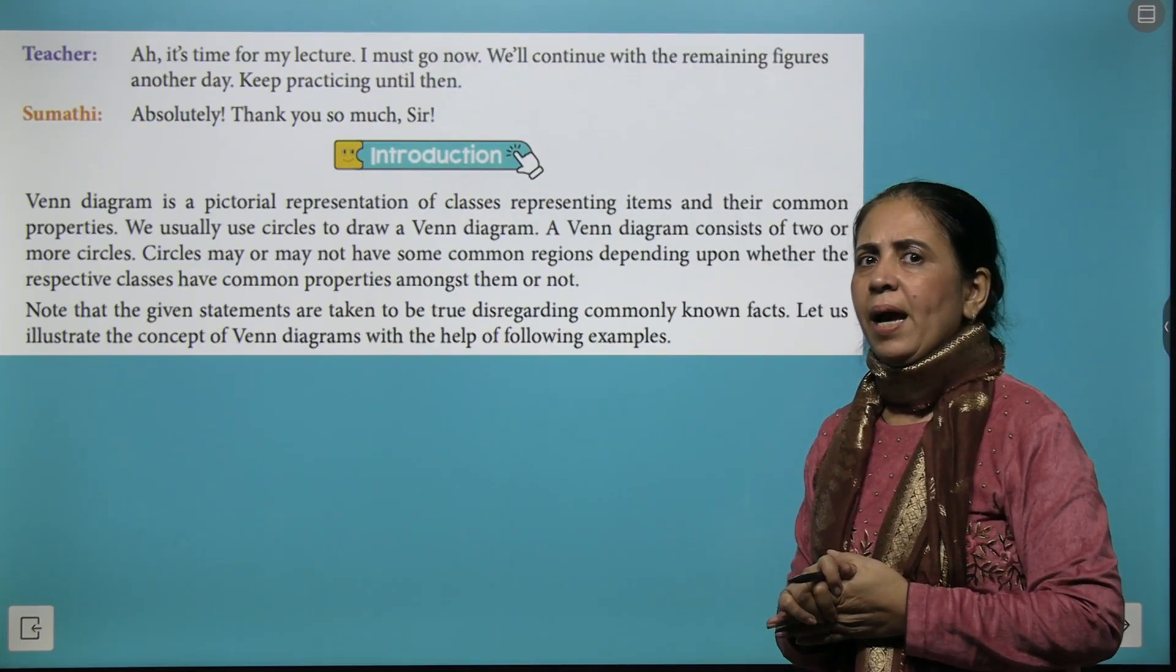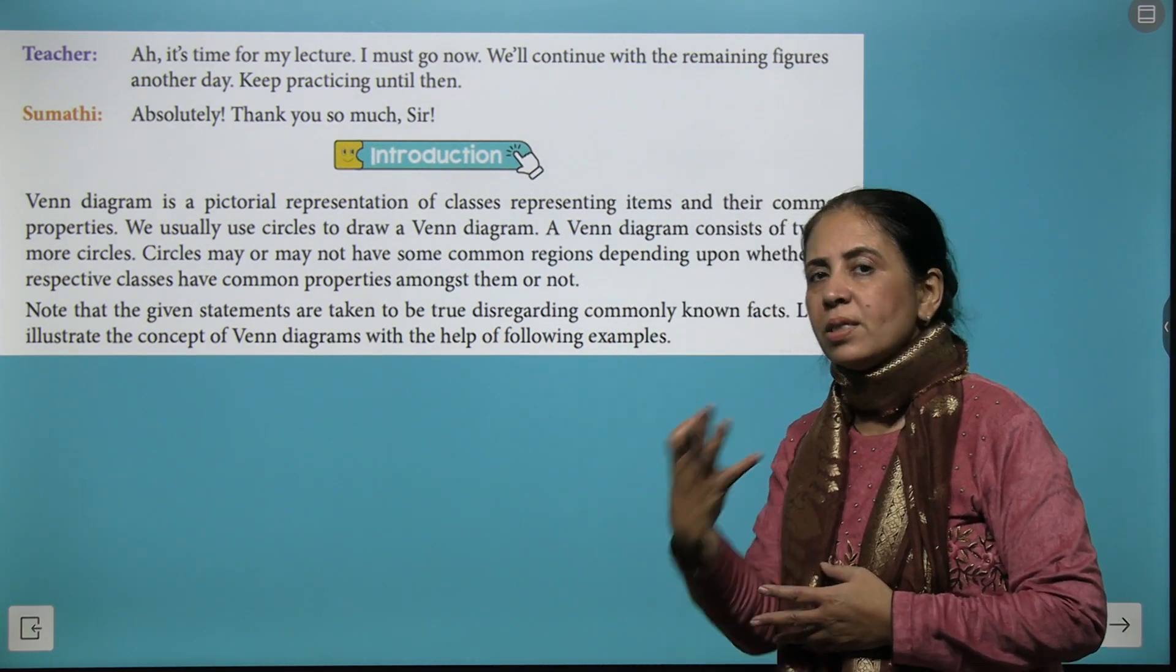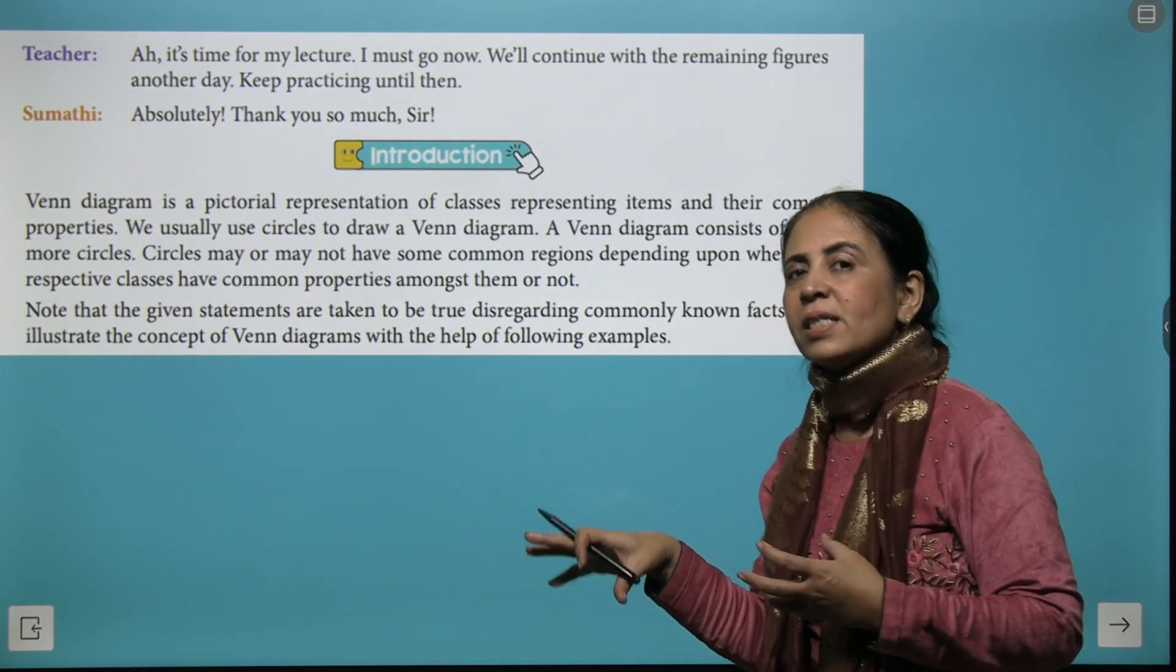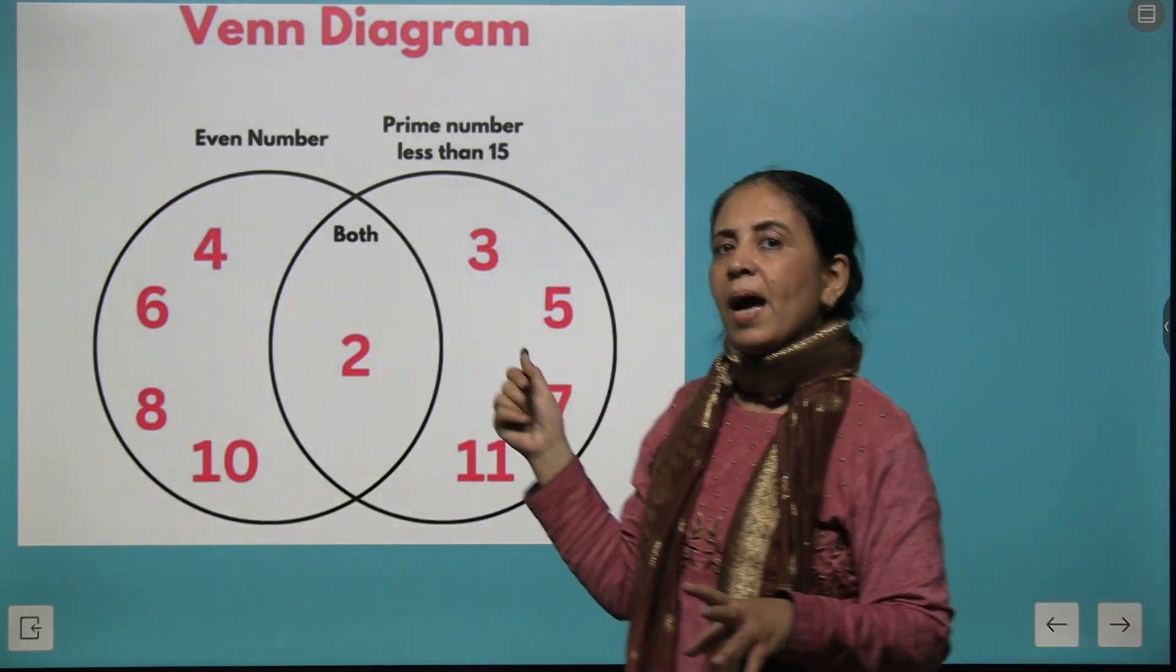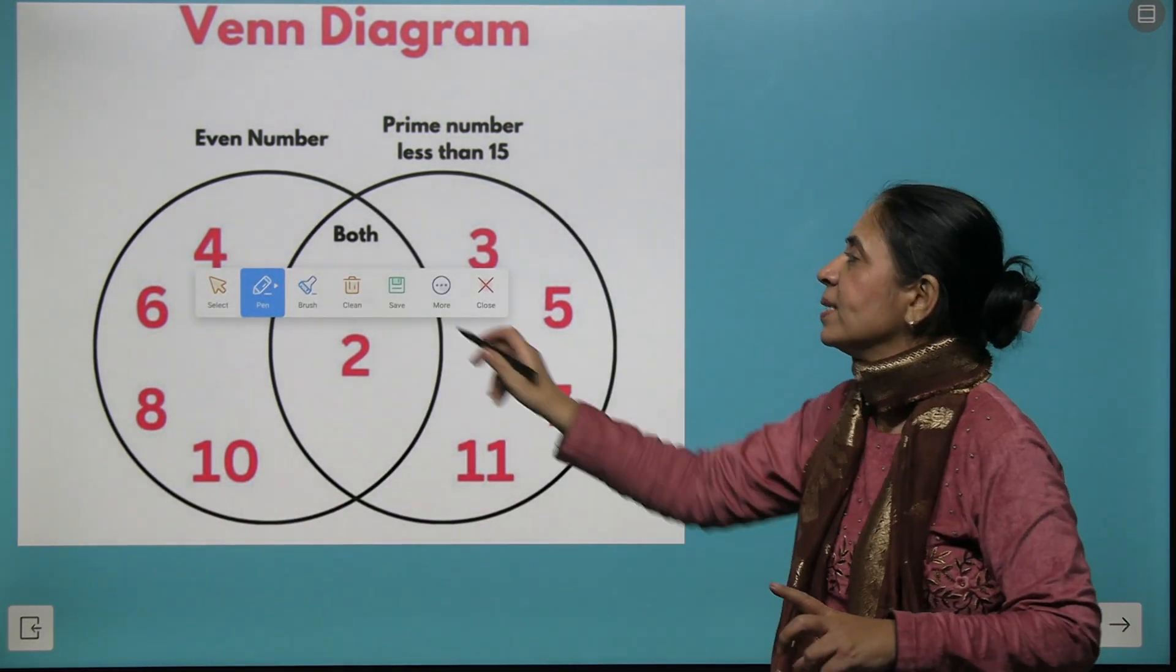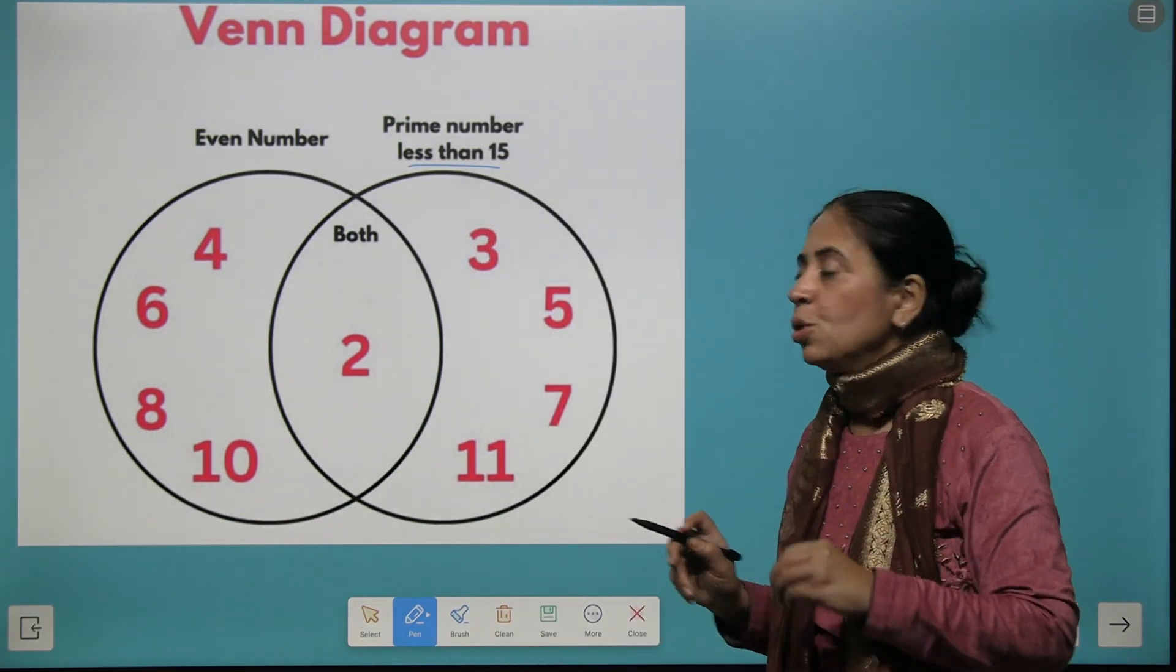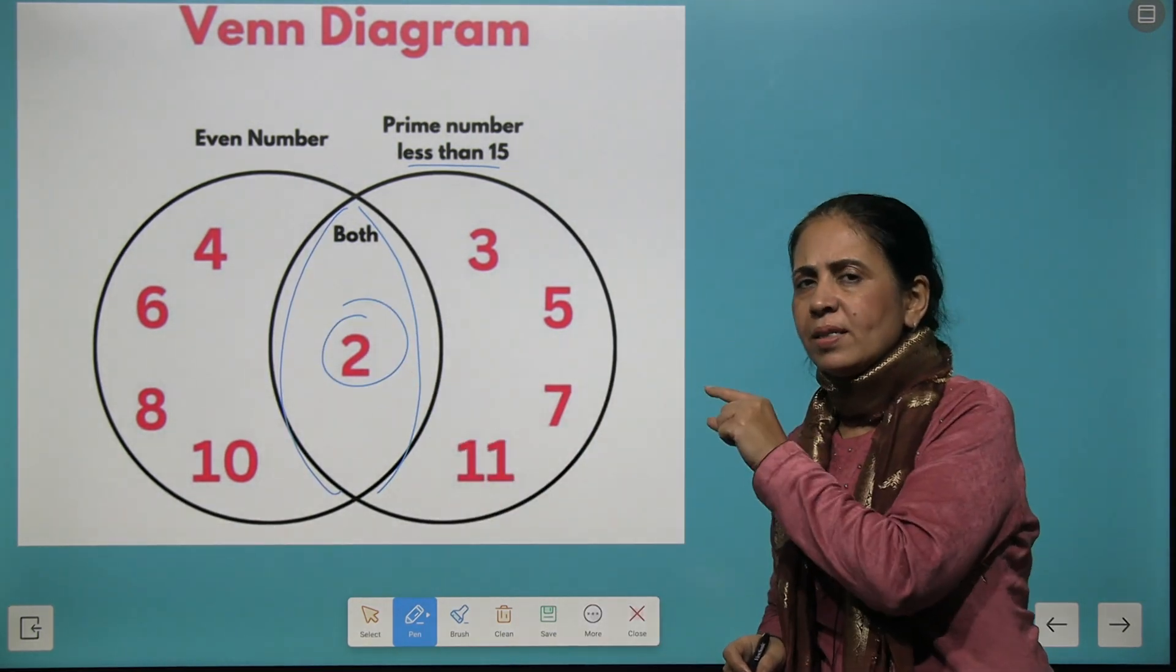Talking further about Venn diagrams, we say that Venn diagrams are represented either with circles, squares, rectangles, triangles, and these shapes represent the property of a particular group of objects. Coming to another Venn diagram which you could see on the screen, here we have two circles. The first circle represents all even numbers up to 10 and the second circle represents prime numbers less than 15. Could you see we have a common part where we have only one number?